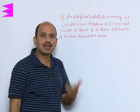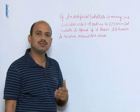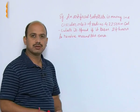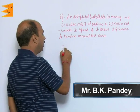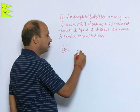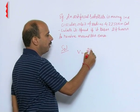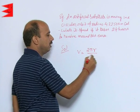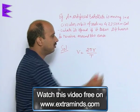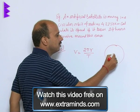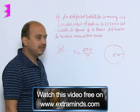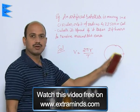As the satellite is revolving around the earth, this is an example of circular motion. Here we have to calculate its speed. The formula for speed is V = 2πr / T, where 2πr is the circumference — that is the complete circumference of the orbit — and T is the time taken to complete one revolution.